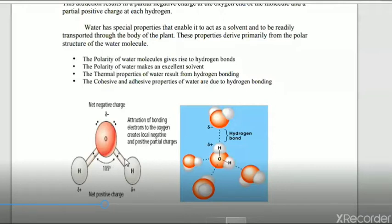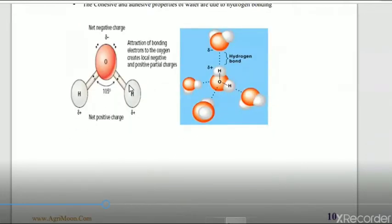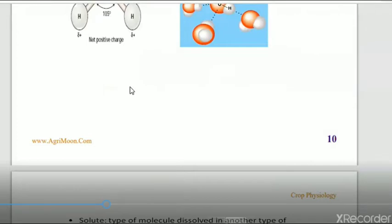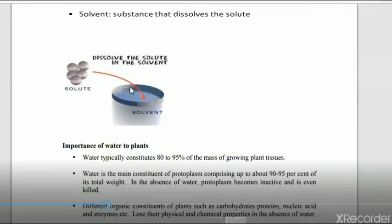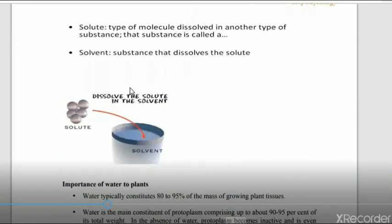This creates local negative and positive partial charges — the hydrogen side carries a positive charge and the oxygen side carries a negative charge. Now we come to two other very important terms: solute and solvent.